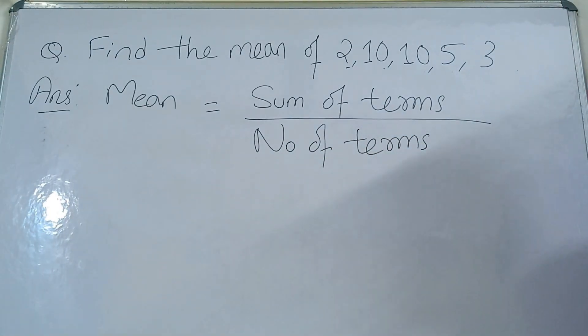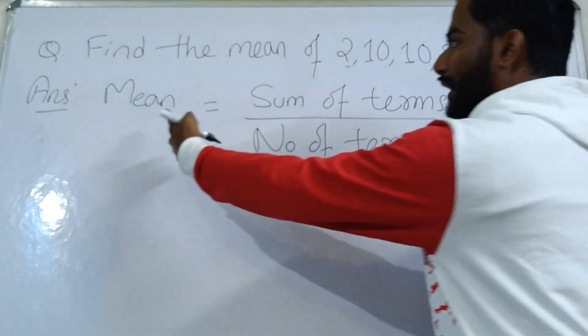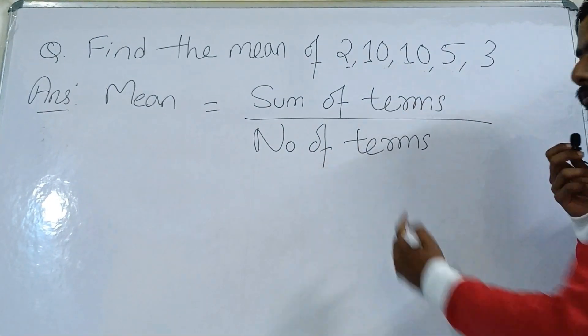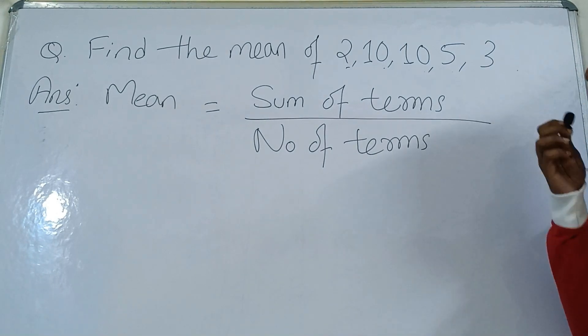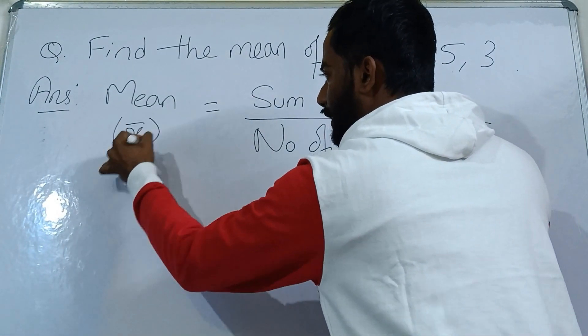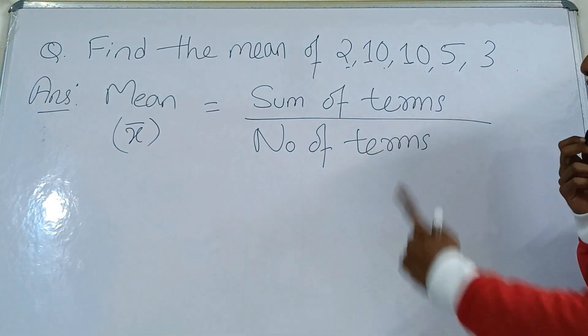Number of terms. So what is mean? From here we understand mean equals to sum of terms divided by number of terms. Now you see that mean is denoted by the symbol x̄ (x bar). So here in our question we are supposed to find the mean.